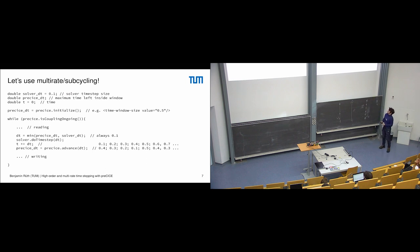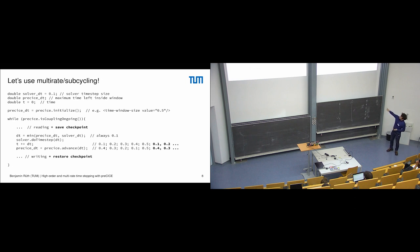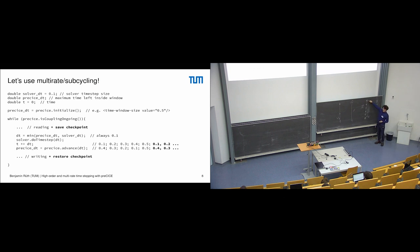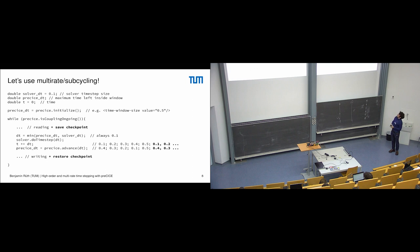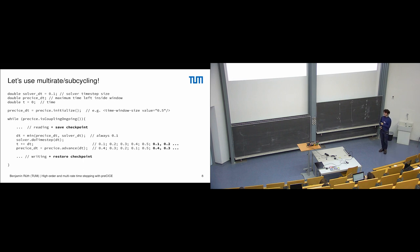Explicit coupling is nice and simple but not always sufficient. With implicit coupling you need checkpointing. The time increases to 0.5, but if the iteration needs to be repeated you jump back to the beginning of the window — t resets and precice_dt goes back to 0.1 and then 0.5 again. The two instances of 0.5 look similar but are very different: one is the end of an iteration, the other is a reset. I hope this clarifies what we mean by subcycling.